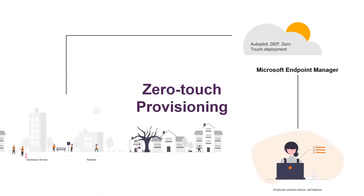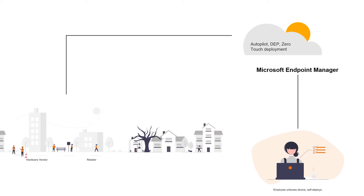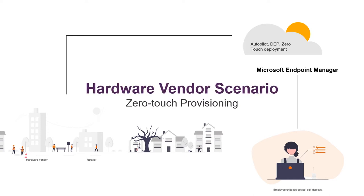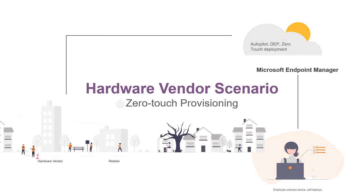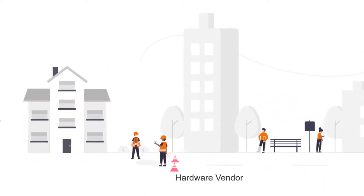I'm going to go back to the autopilot and give you a snapshot of how zero-touch provisioning works. When you order a new device, there are two ways you can do it. One is through a hardware vendor — this could be Dell, Lenovo, or Microsoft. When you order through them, the hardware vendor will automatically configure the device ID to show up in the autopilot portal.